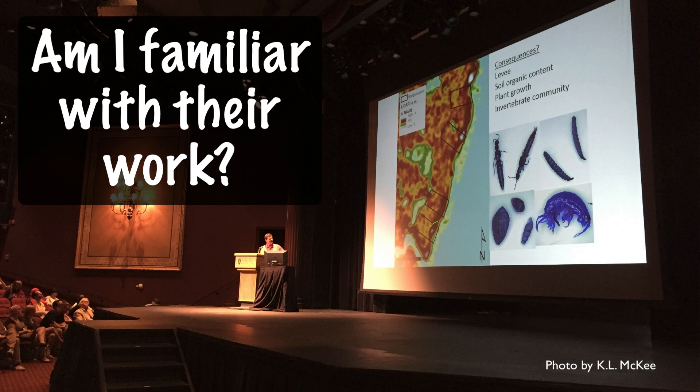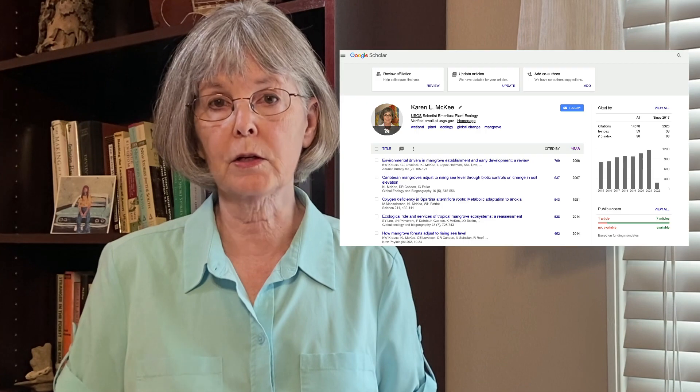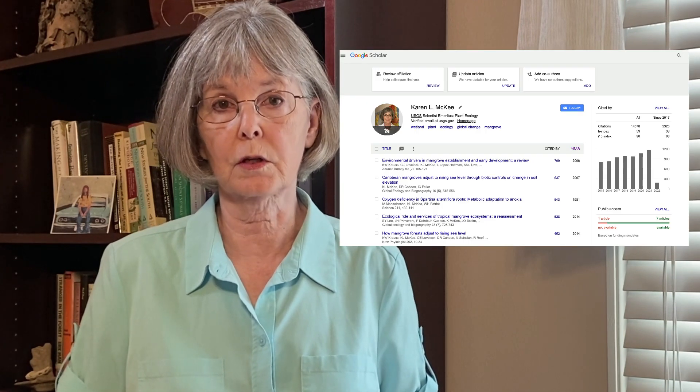Are they known and respected in the field, and am I familiar with their work? In many cases, I've known collaborators initially only through their publications or have heard them speak at meetings. If not, I conduct an online search of their publications. A quick search on Web of Science, Google Scholar citations, or ResearchGate should provide such a list. If they've not published anything, then there needs to be some other strong reason to collaborate with them, such as a needed skill that you lack.